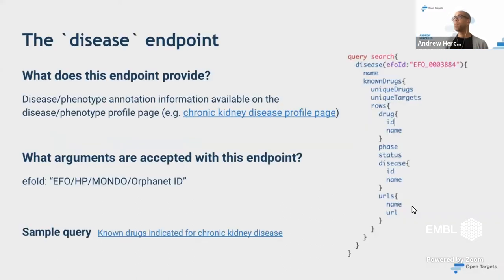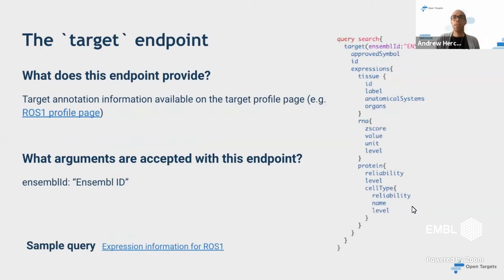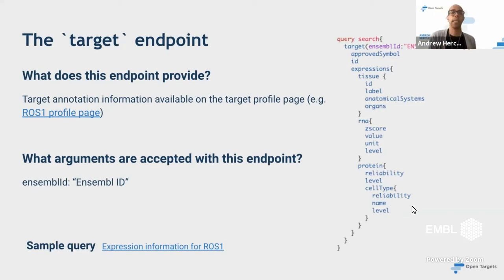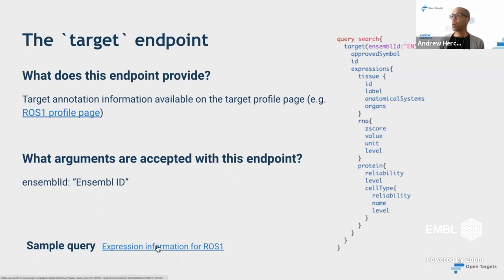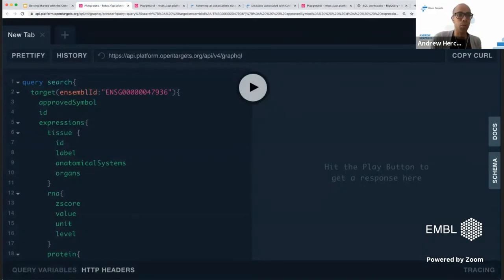Starting with the target endpoint: we are all about target identification and prioritization. The target endpoint provides annotation information available on a target profile page. The mandatory argument for this endpoint is the Ensembl ID. To the right you can see a sample query string pulled from the Playground — but let me show the API in real time.